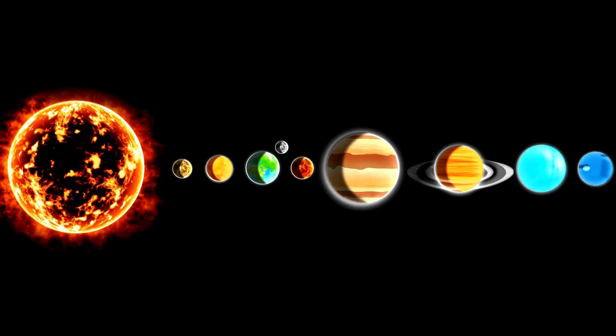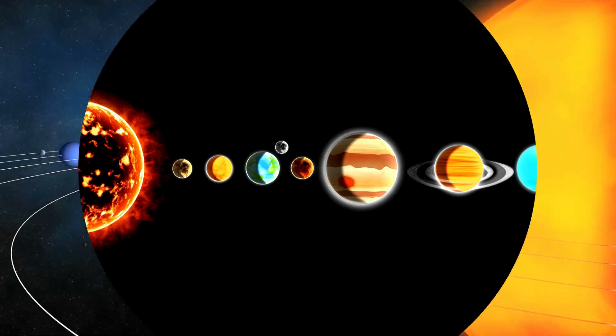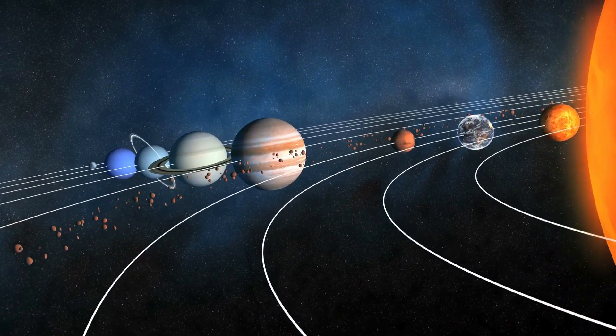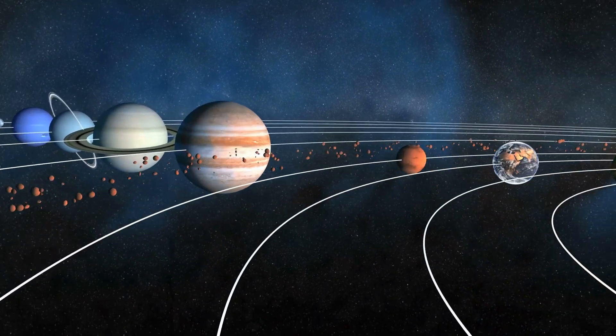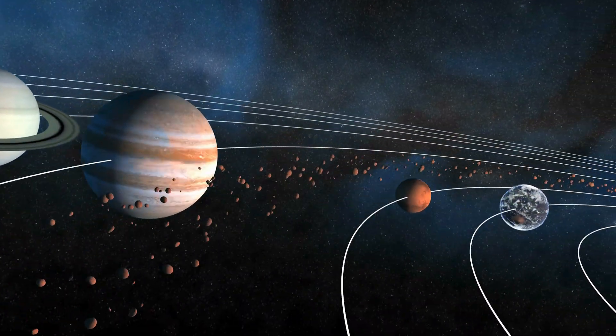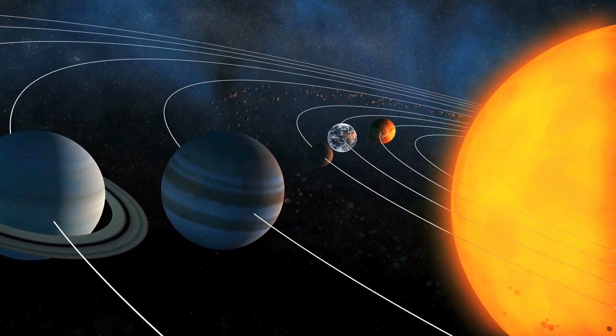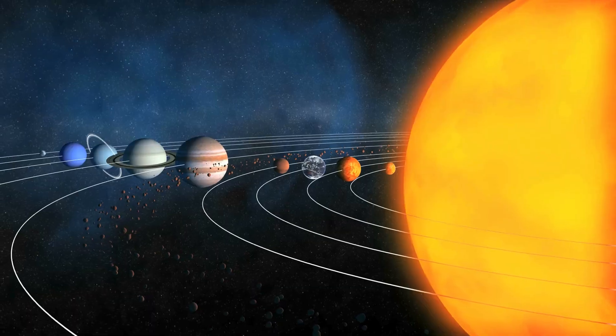What makes Earth special in the solar system? Earth is very special because it's the only planet we know that has life. It's just the right distance from the sun, not too hot and not too cold, which allows water to be liquid. This is important because all living things need water to survive.